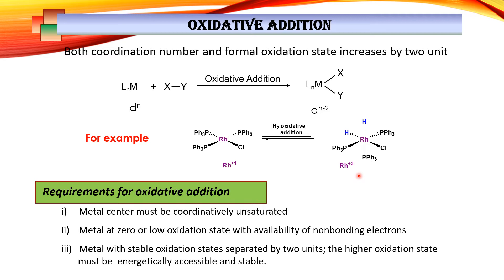Which types of complexes are suitable for oxidative addition? Since oxidative addition leads to an increase in coordination number, the metal complex should have space to accommodate the incoming ligands — that means it should be coordinatively unsaturated. Second, since the metal is getting oxidized, it should be at its lowest or a lower oxidation state, and there should be available non-bonding electron pairs or orbitals to interact with the substrate. The higher oxidation state should also be energetically accessible.